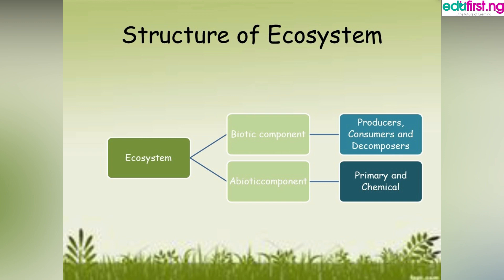The abiotic component includes all the non-living parts of the environment. For the abiotic component of the ecosystem, we have the physical and chemical parts. These practically provide all the energy for the ecosystem. This includes temperature, light, and minerals — these are all known as the abiotic components of the ecosystem.